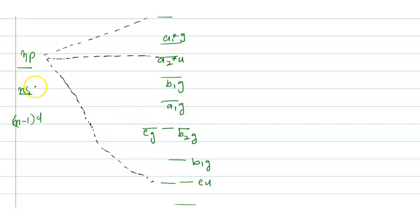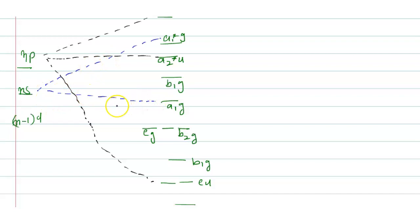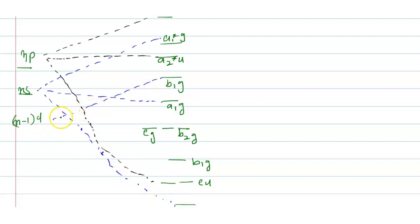The ns orbital combines to form a1g* (anti-bonding) at the top and a1g (bonding) at the bottom. The (n-1)d orbitals combine to form b1g* (anti-bonding) and b1g (bonding), as well as an a1g level.